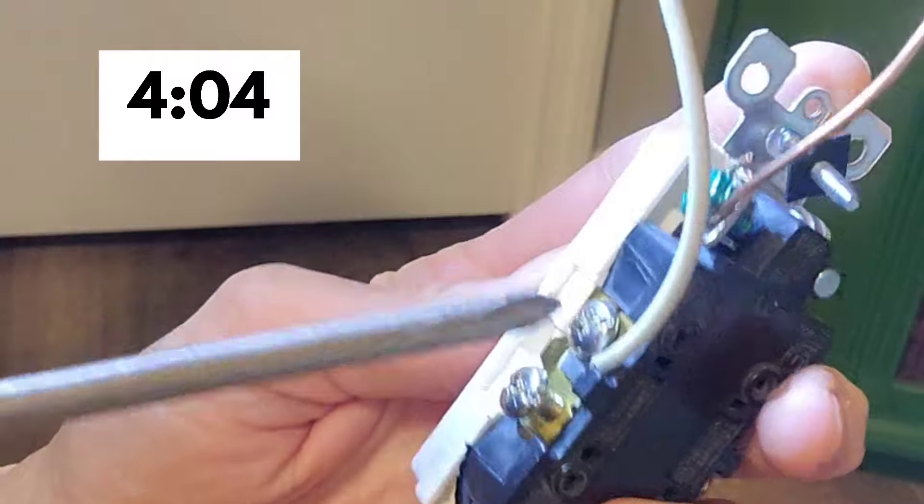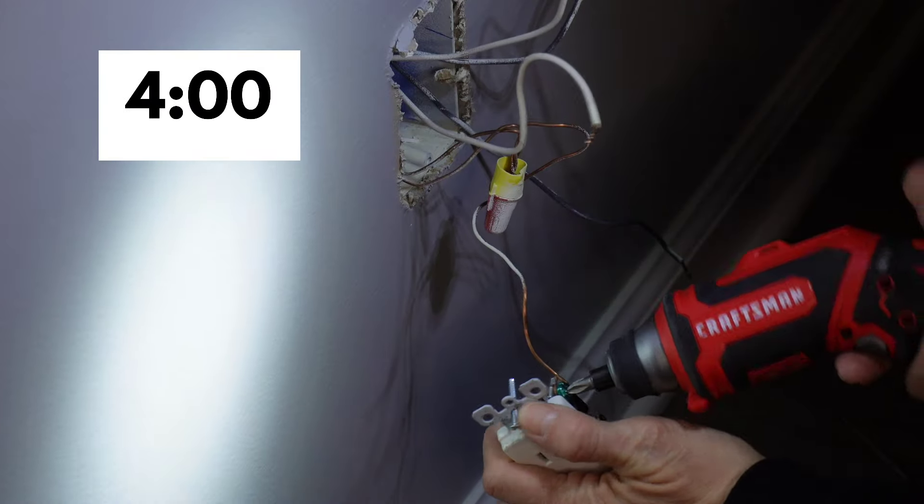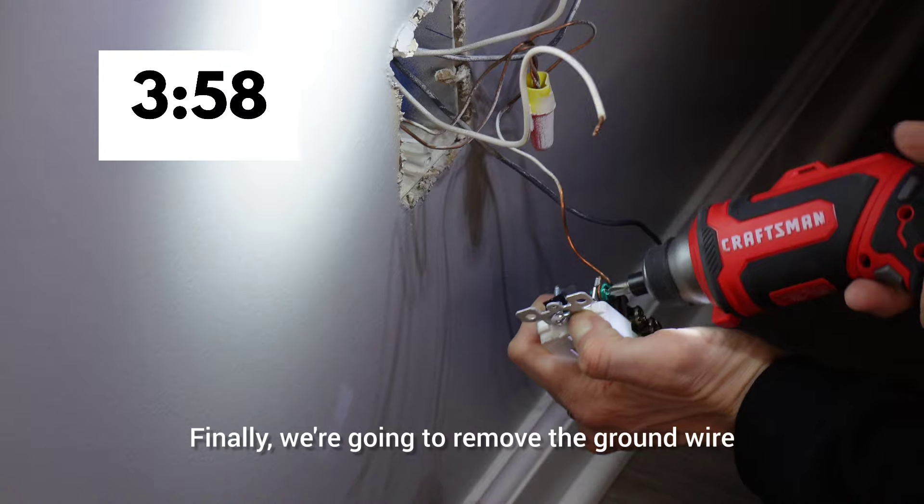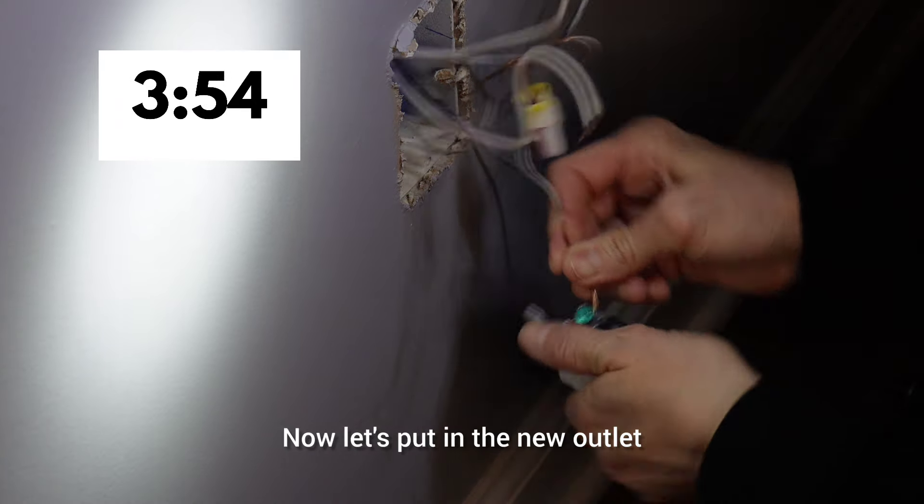So there's that one. And here is the last one. Finally, we're going to remove the ground wire. So we've got all of the wires out of the old outlet. Now let's put in the new outlet.